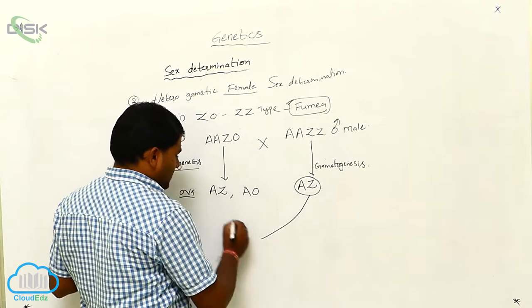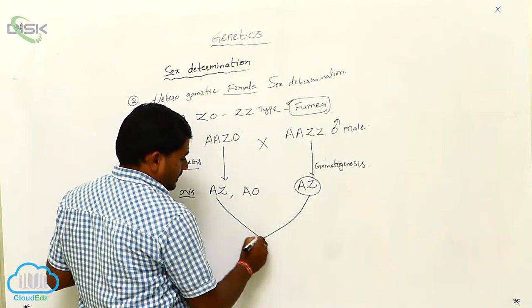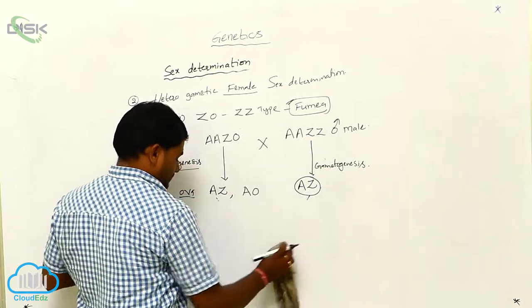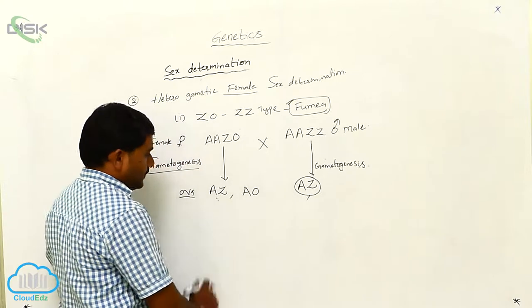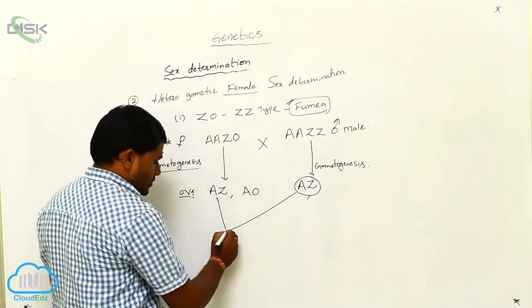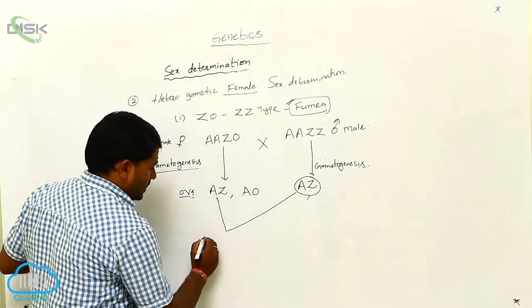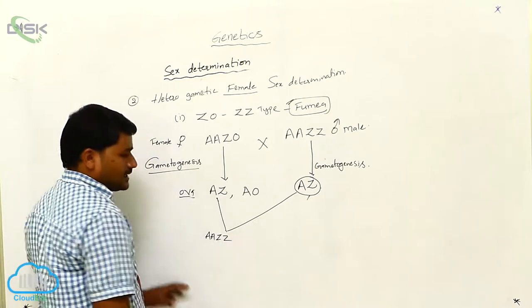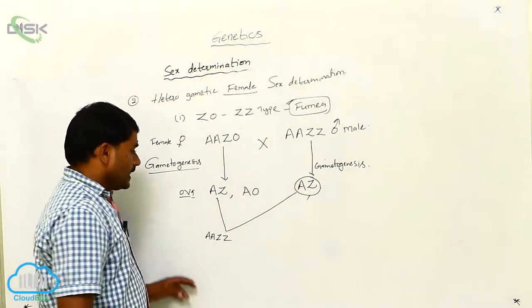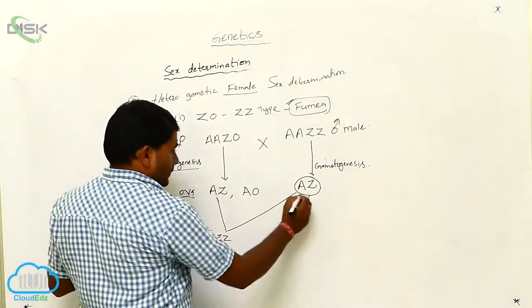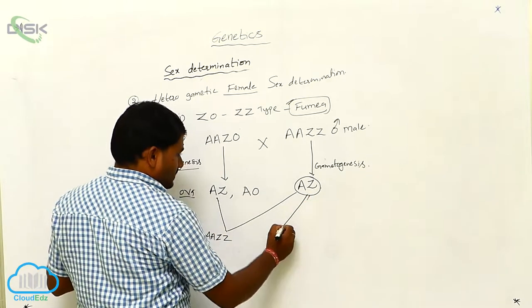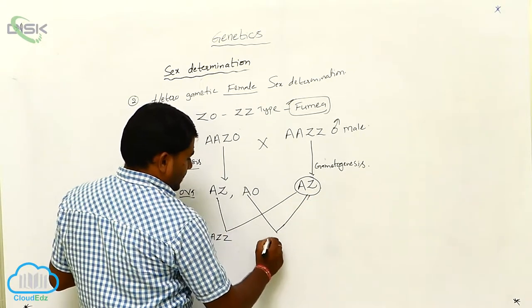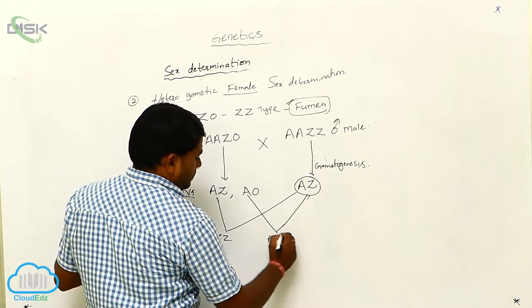Sperms are the same type. When two gametes fuse, for example if these two are going for fusion, the characters are A, A, Z, Z. If these sperms are meeting with this type of ovum: A, A, Z, 0.